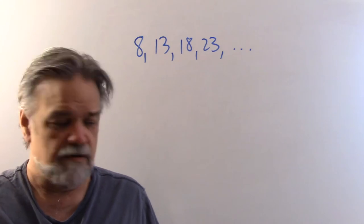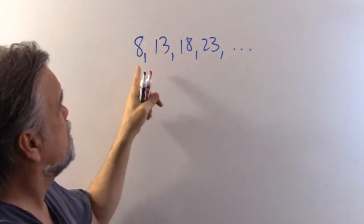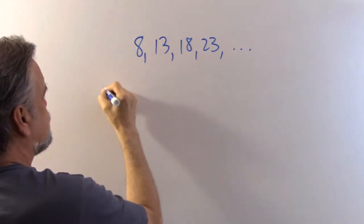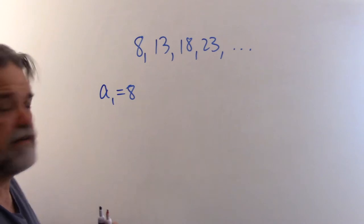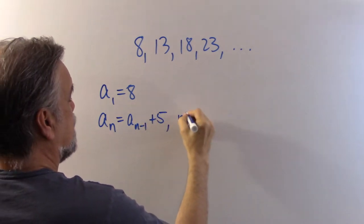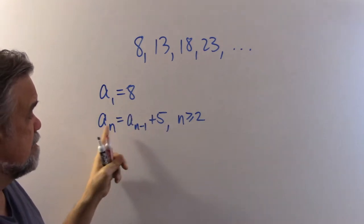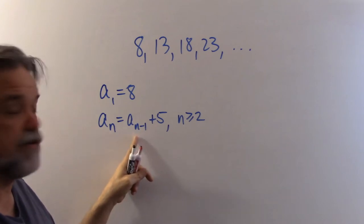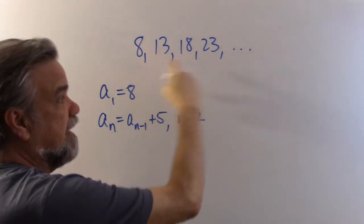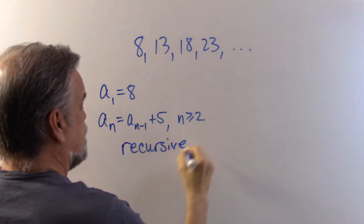You might be looking at this and saying, okay, I see what's happening here — each time we're just adding five. Well, each time we're adding five — that's a recursive definition. And this is the way we'd write it: a one equals eight, so our first term is eight. And a sub n is going to equal a sub n minus one plus five, for n greater than or equal to two. So what's it saying? We're going to start with eight, and then to define some term, we look at the prior term and add five to it. The n greater than or equal to two says that's the rule for the second and on term. That's a recursive definition of that sequence.